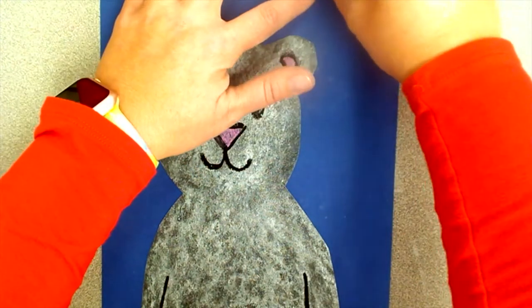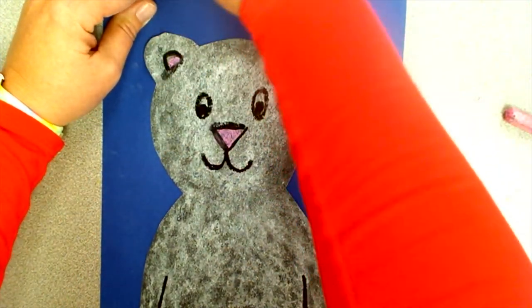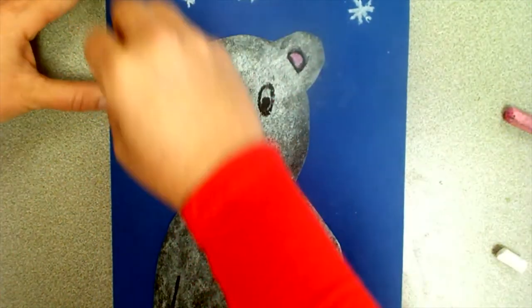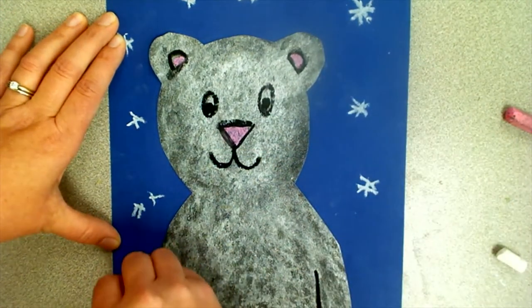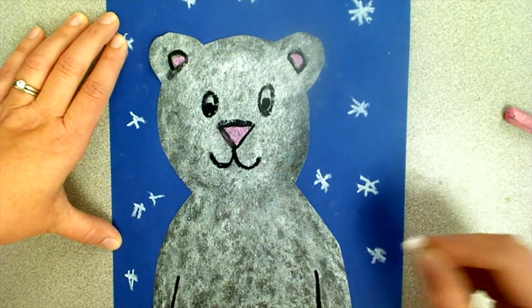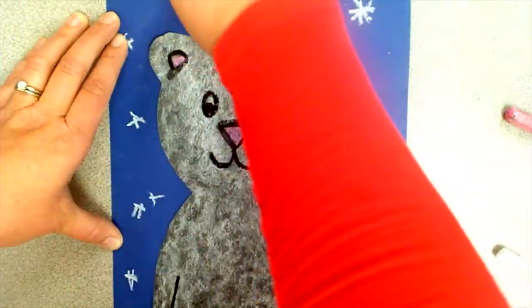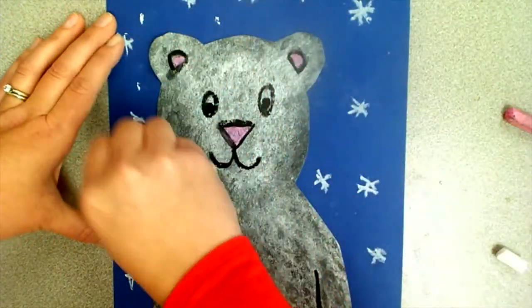Use a white oil pastel, not the chalk. Draw some snowflakes in the sky. You can do dots or you can do like I'm doing, like a star shape for a snowflake. Or if you know how to draw snowflakes, you can actually draw individual snowflakes in the background too.